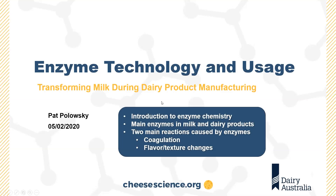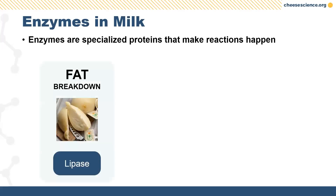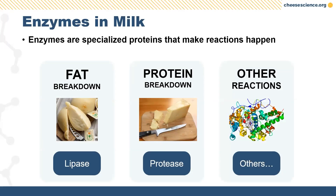A quick way to think about how enzymes are partitioned in milk is based on what they break down. Enzymes at their core are special types of proteins that usually cause breakdown. Enzymes that break down fat molecules are called lipases; those that break down protein molecules, which are plentiful in dairy products, are called proteases. There's a trend with the naming. Fat and protein breakdown are some of the most important reactions happening in dairy products, all because of enzymes.